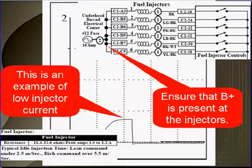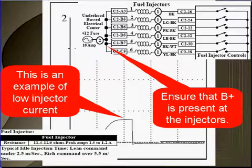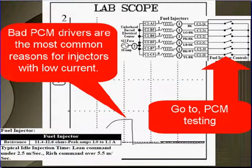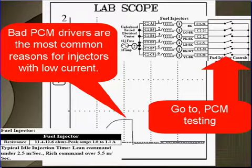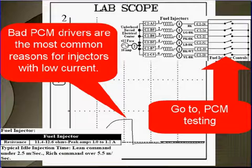This is an example of a low current injector. Ensure that B+ is present at the injector — in order to have the right current, we have to have the right B+. Bad PCM drivers are the most common reason for injectors with low current. Go to PCM testing if you suspect a PCM driver.